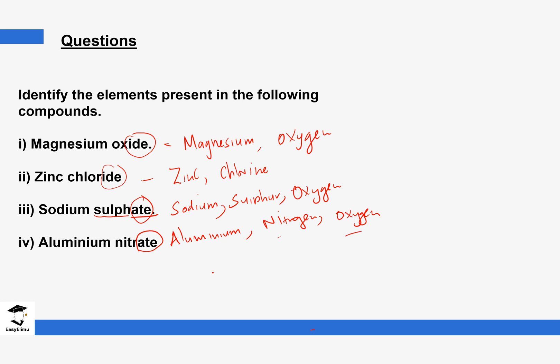This brings us to the end of today's lesson. In the next lesson we are going to be looking at symbols of these elements and go into details on how to write them. See you in the next lesson.